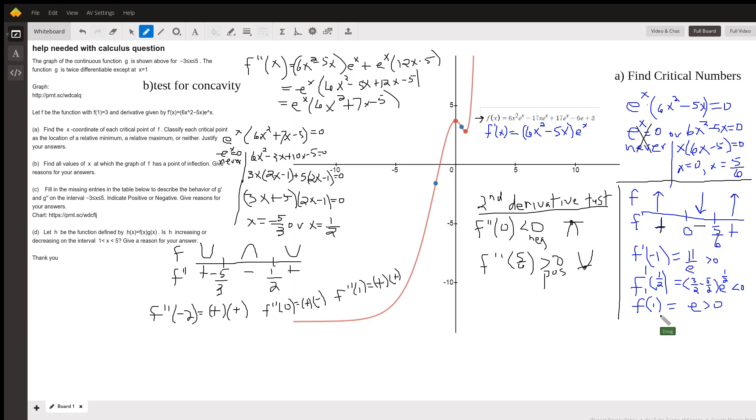And to the right of 5/6, we might try f prime of 1, which is e, which is greater than 0, so positive. So by looking at these arrows, first derivative test, we can see that there's a relative maximum at 0 because we went from increasing to decreasing. Here's that relative maximum right here, horizontal tangent line. Function's going from increasing to decreasing at 0. And at 5/6, which is this point right here, the function's going from decreasing to increasing, so there's a relative minimum at 5/6.